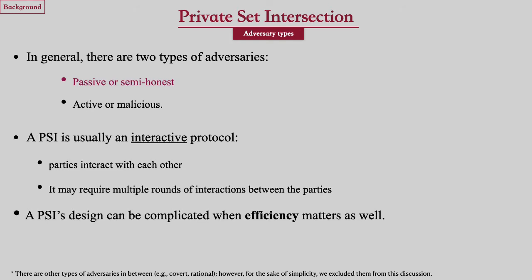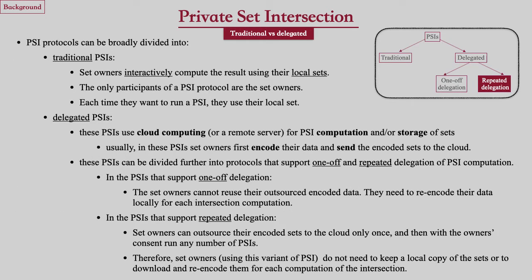In general, there are two types of adversaries: passive or semi-honest, and active or malicious. The focus of this work is on the semi-honest adversarial type. A PSI is usually an interactive protocol, meaning that parties interact with each other over multiple rounds. A PSI design can be complicated when efficiency matters as well.